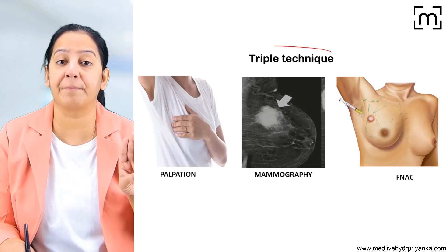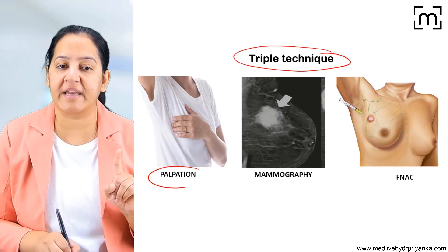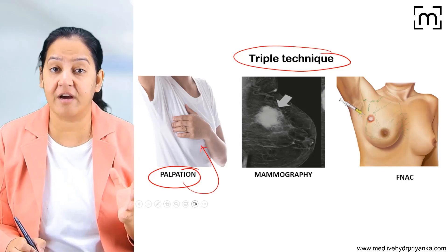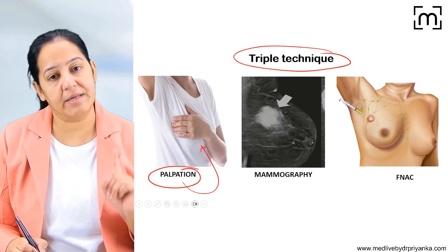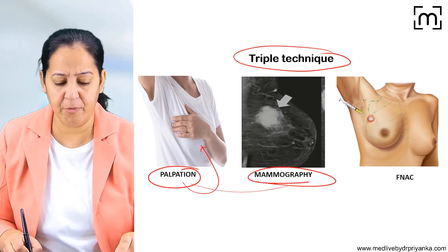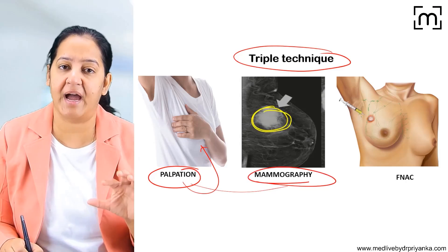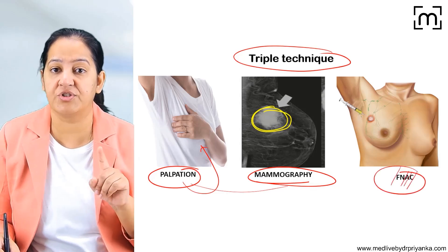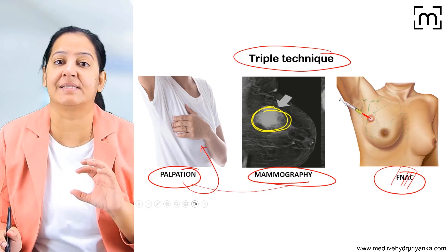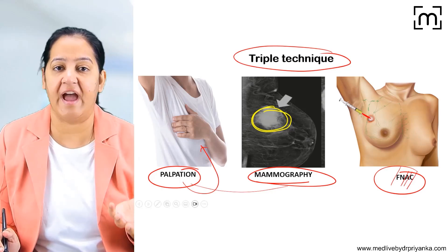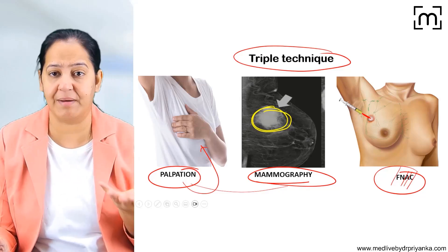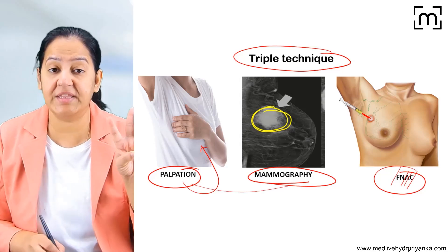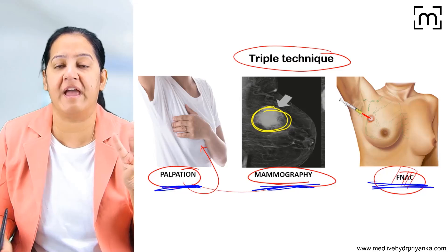There is a technique called the triple technique for diagnosing breast cancer. The most important thing in the triple technique is self-palpation — manual self-breast palpation — the female herself can detect a mass in the breast. After that, mammography should be performed; in mammography we can see the mass and determine whether it is benign or malignant. Finally, FNAC — Fine Needle Aspiration Cytology — is performed, in which with the help of a fine needle we aspirate a few cells from that lesion, make a smear, and see whether it is benign or malignant. If it is malignant, surgery is done at the earliest.